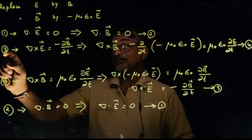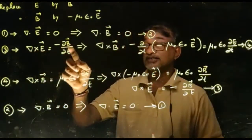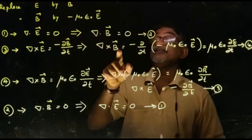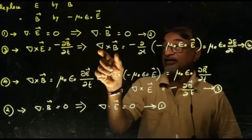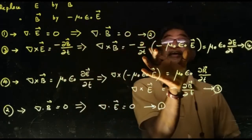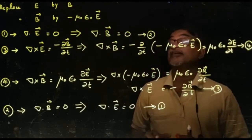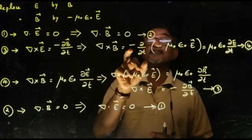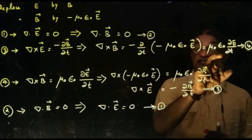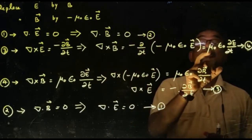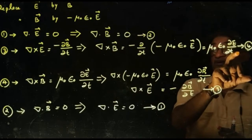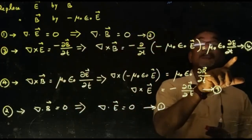Take equation 3: ∇×E = −∂B/∂t. Replacing E with B and B with −μ₀ε₀E, we get ∇×B = −∂(−μ₀ε₀E)/∂t. Taking the constants outside, this equals μ₀ε₀ ∂E/∂t, which is equation 4. So equation 3 transforms into equation 4.